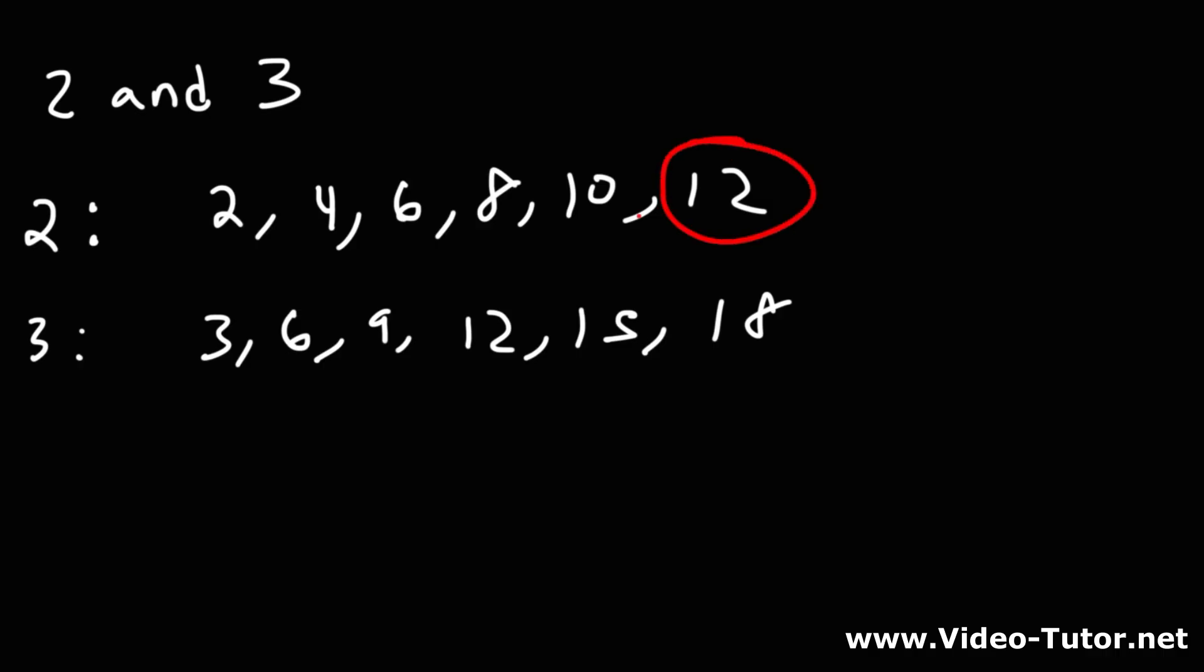Notice that 12 is a common multiple of 2 and 3, but also 6 is a common multiple of 2 and 3. Now, we don't just want to find a common multiple. We want to find the LCM, the least common multiple, the common multiple at the lowest value, and that is 6.